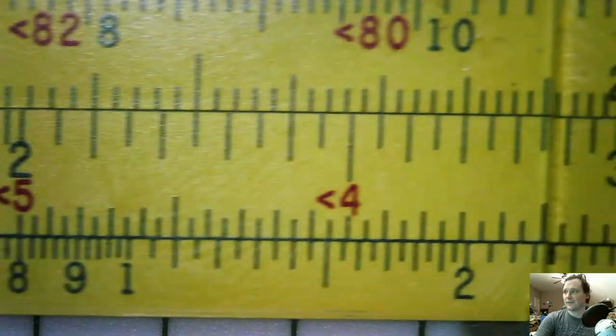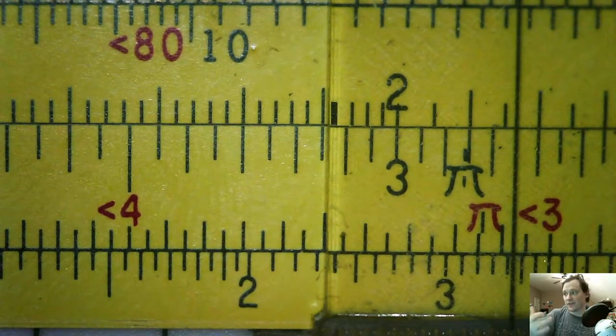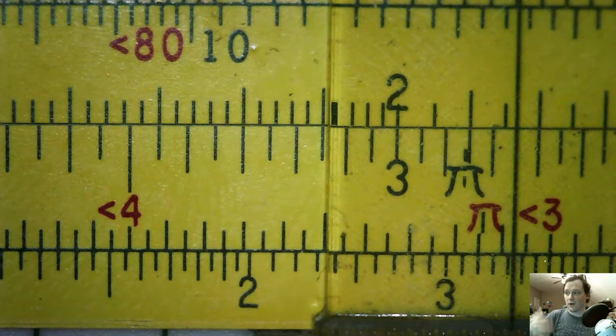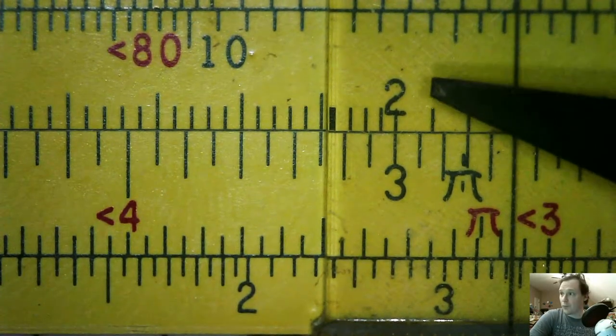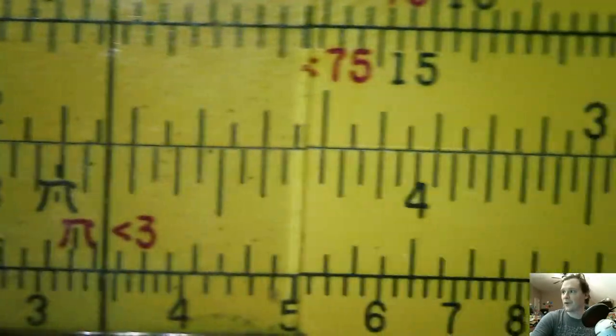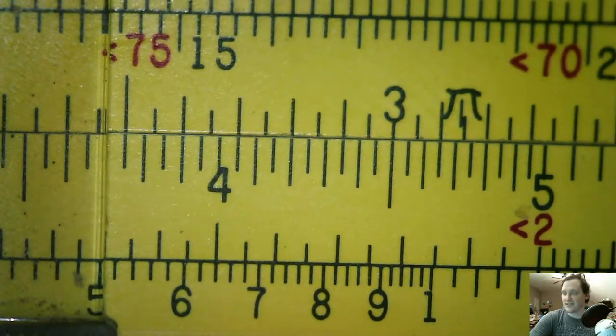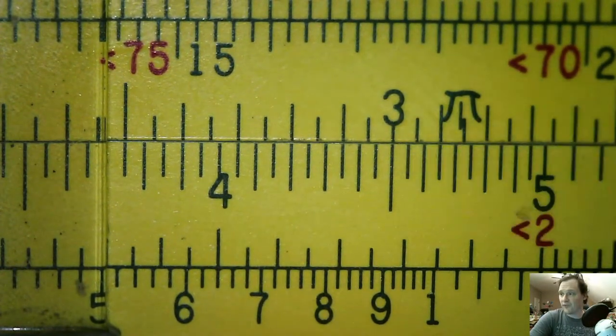Now, any time we look at a number on the C scale, we will get that exact result of 1.5 times that number on the D scale. So what is 1.5 times 2? Well, it's 3. And you'll see that that lines up perfectly. What's 1.5 times 3? Right there. It's 4.5.